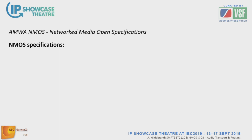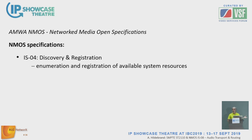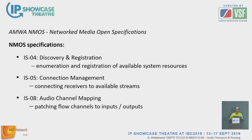The relevant specifications for audio transport and connection management are: IS-04 for discovery and registration — knowing what's available in the system, what streams, senders, receivers, and their capabilities. IS-05 provides an API for actually making connections — telling devices to connect to a particular existing stream. And now there's IS-08, which tells devices how to route the channels within a connected stream to available outputs. For example, if you subscribe to an eight-channel stream but have 64 outputs, you need to specify which channels go where — that's IS-08.